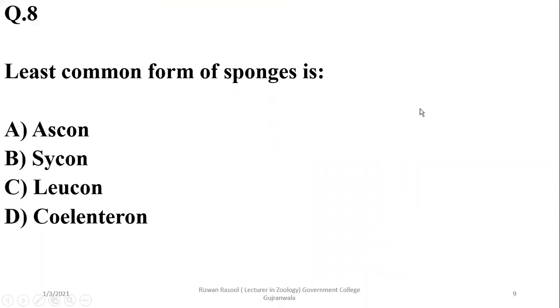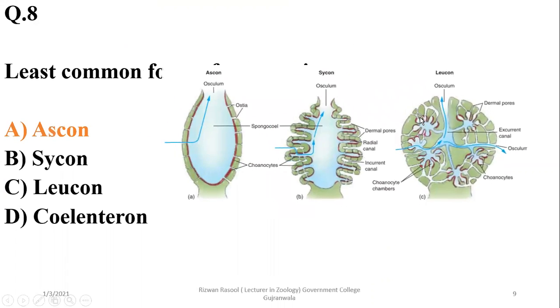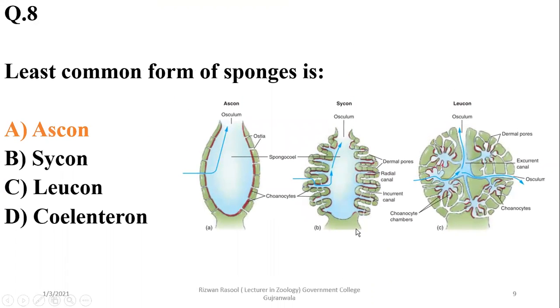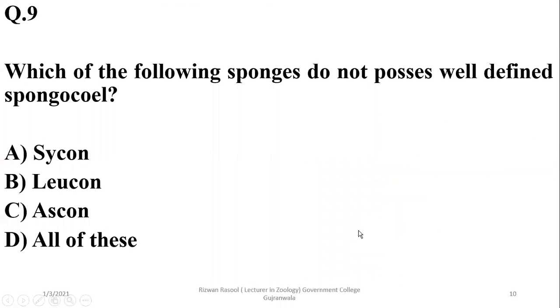Least common form of sponges out of the three—ascon, sycon, and leucon—is ascon. Ascon sponges are the simplest, so the right option is alpha. Which of the following sponges do not possess a well-defined spongocoel?